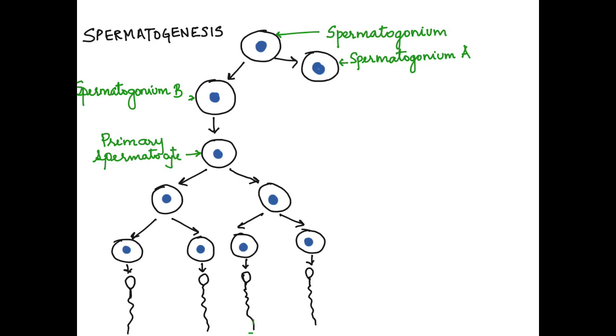This primary spermatocyte undergoes meiotic division. It undergoes meiosis I to give rise to two secondary spermatocytes.